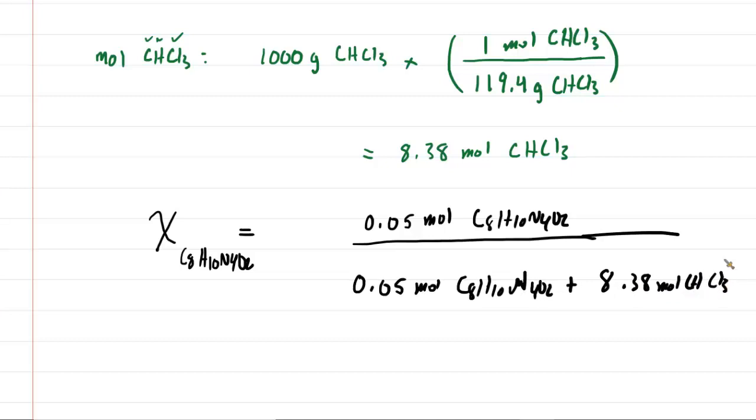We're going to go ahead and figure this out. And when we do so, we will get a mole fraction of 0.00593, roughly. Now there would be no units because you're dividing moles by moles. So they cancel out. This would be the correct answer to part B.